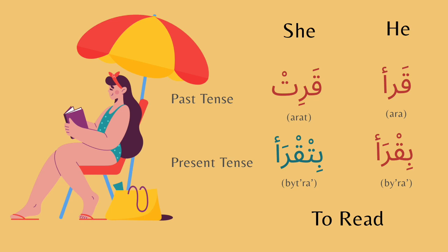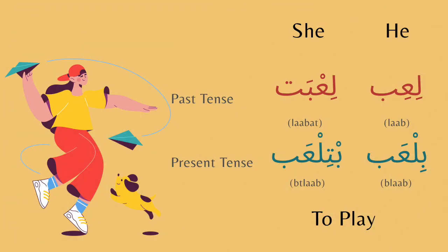The next verb is to play. The past tense for he is liab. For she it's liabit. The present tense for he is byilab. The present tense for she is btilab. Listen again.